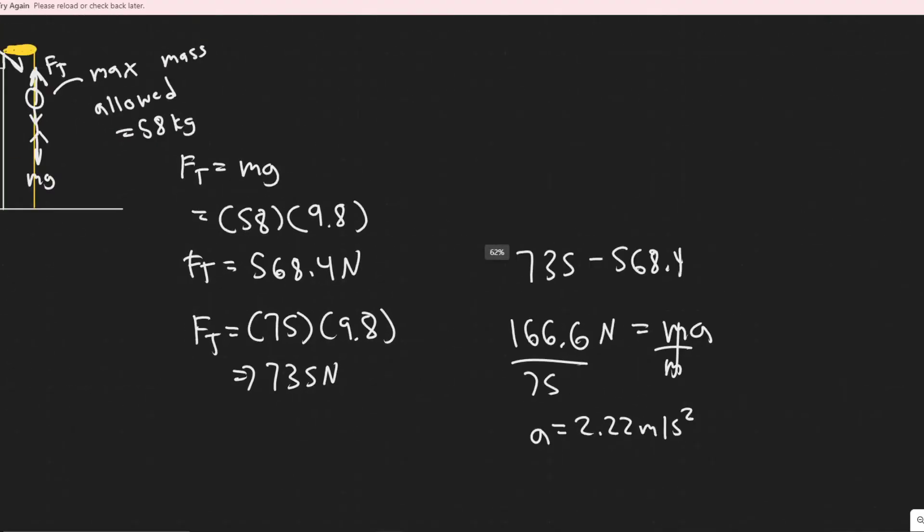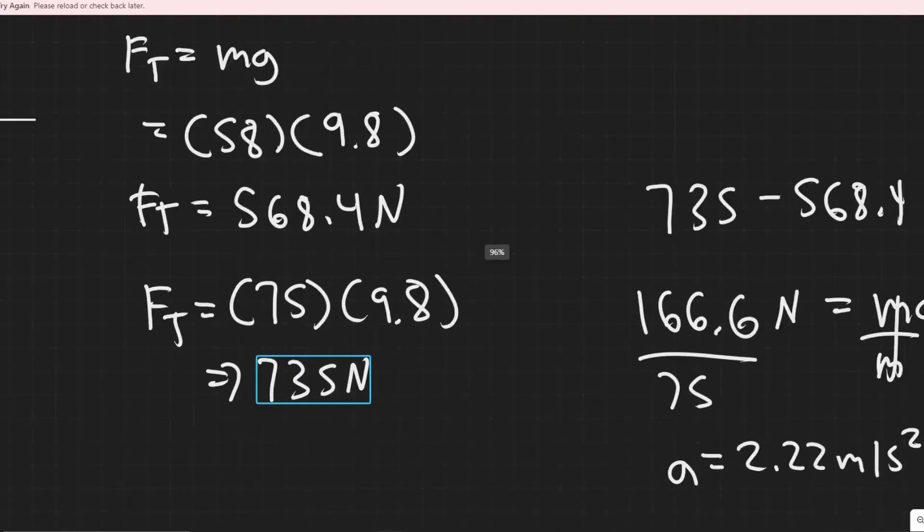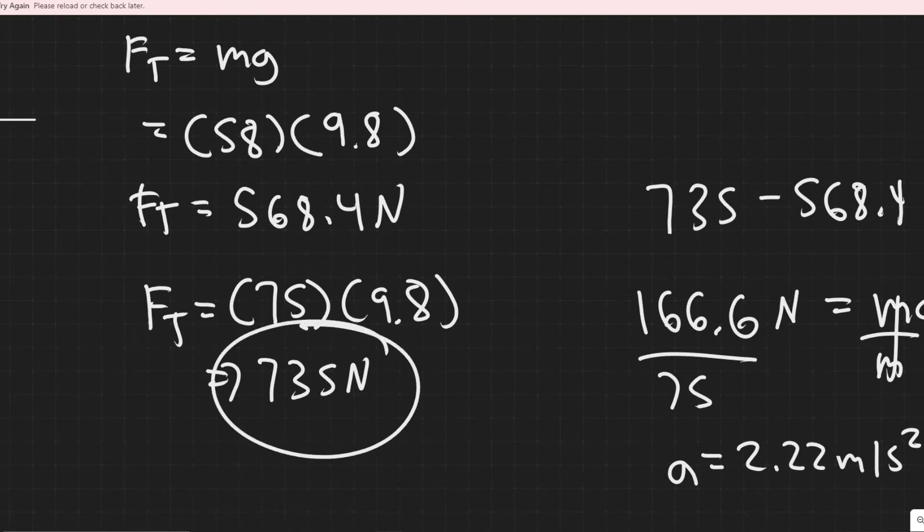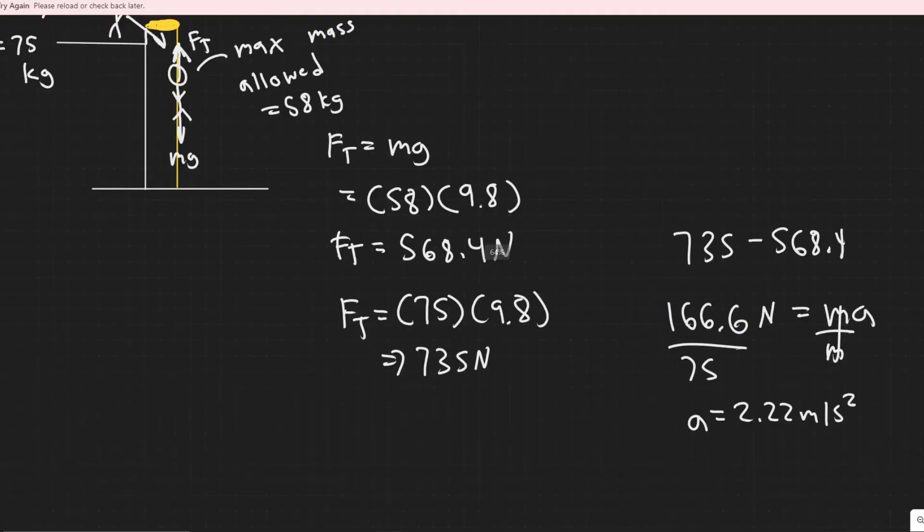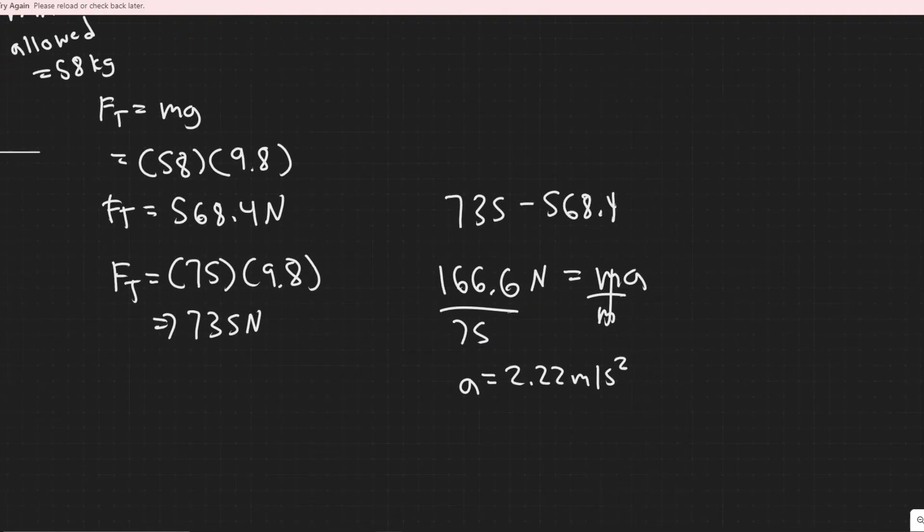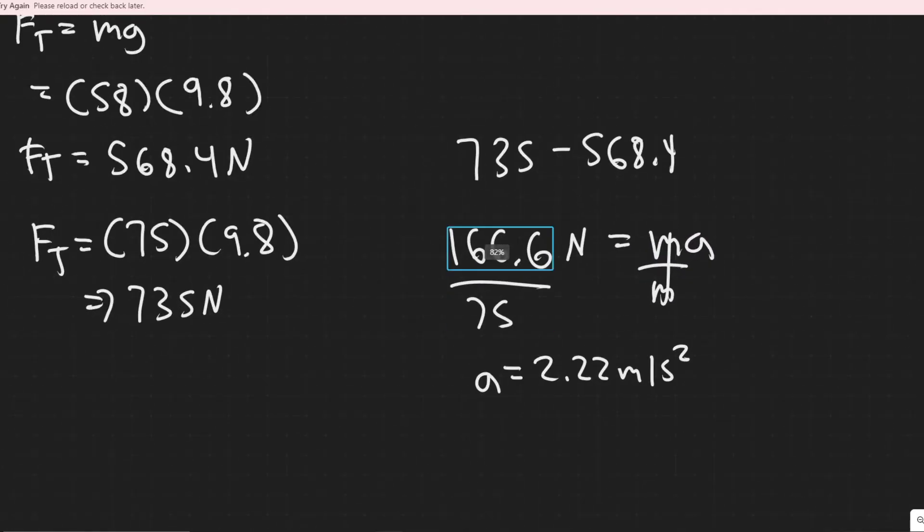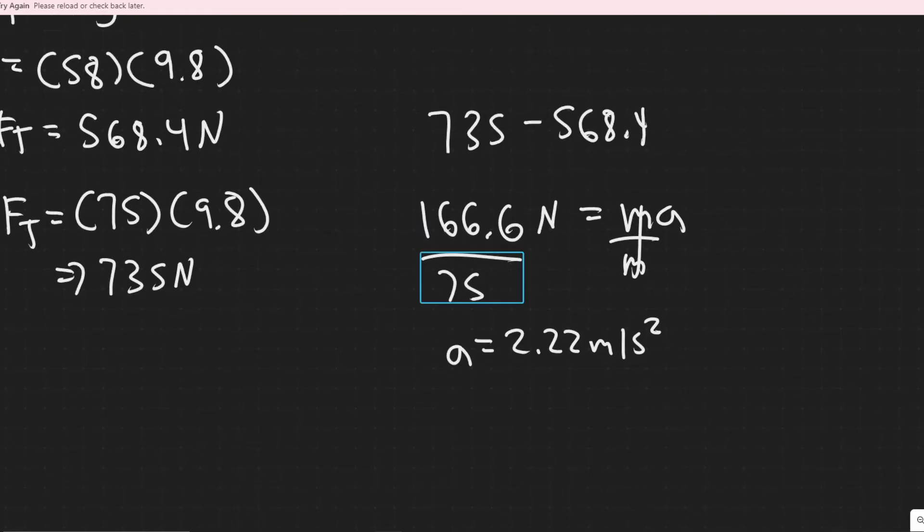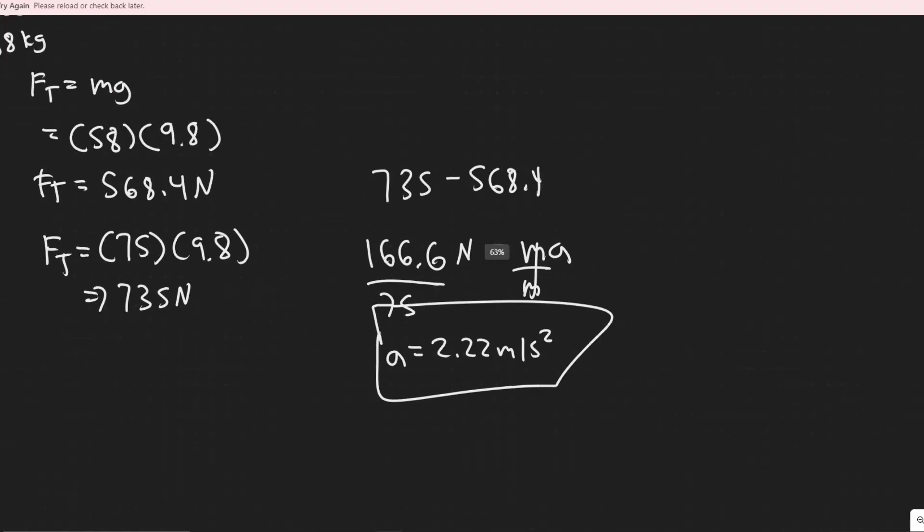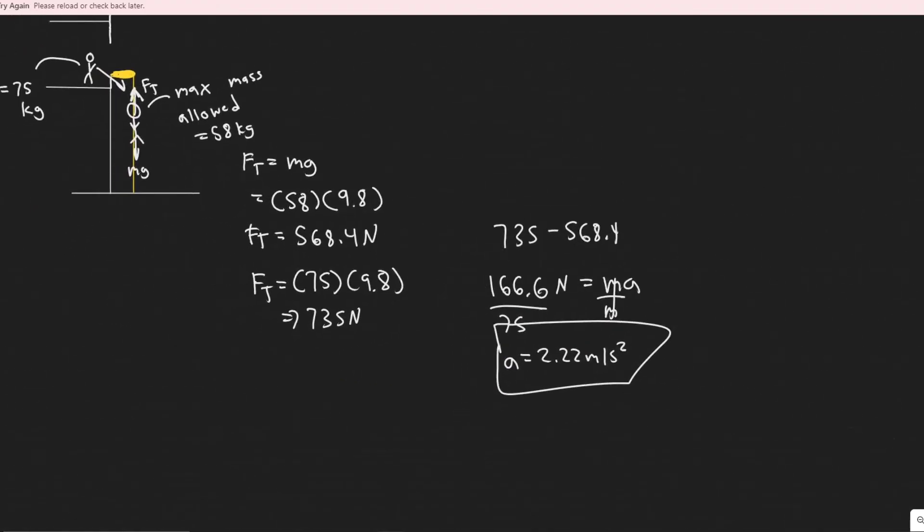So hopefully that makes sense. So all we did was look at the tension required, which is his weight here, how much it actually holds, and then we found the difference. So I know it's going to have to make up 166.6 newtons, and then I know if the sum of the forces equal MA, because we have to make up for this, and then you can divide by his mass to get the acceleration. And so this would be the acceleration required for it not to break. So this is essentially their quantitative answer.